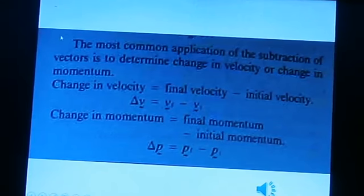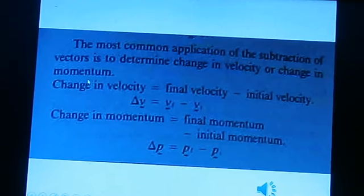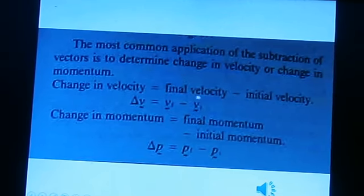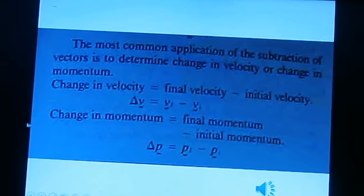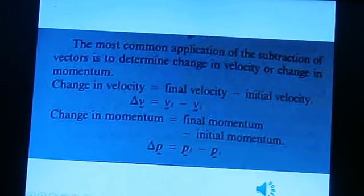The most common application of the subtraction of vectors is to determine the change in velocity or change in momentum. Change in velocity equals final velocity minus initial velocity, so delta V is equal to VF minus VI. Change in momentum equals final momentum minus initial momentum, so delta P equals PF minus PI.